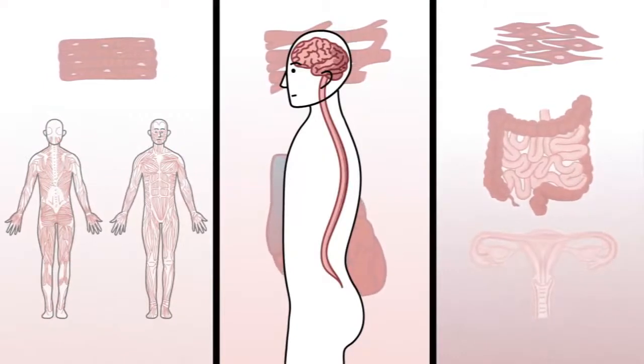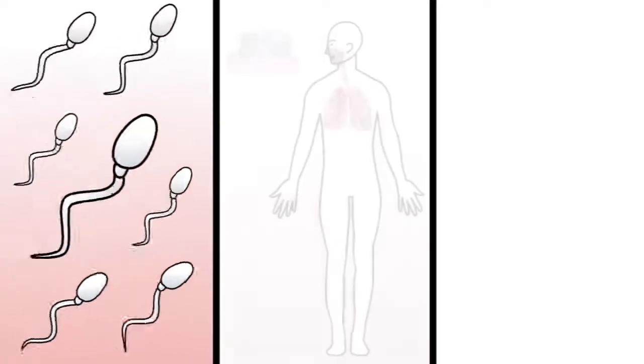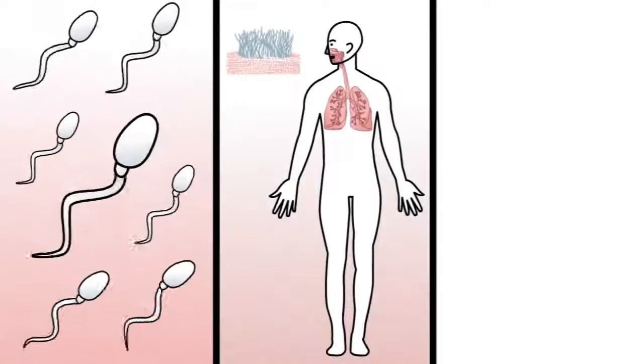This produces almost all the movements we make. Some of the only parts of the body whose motions aren't governed by the muscular system are sperm cells, the hair-like cilia in our airways, and certain white blood cells.